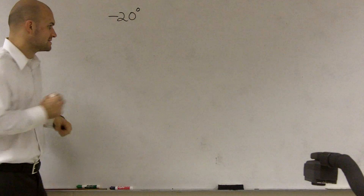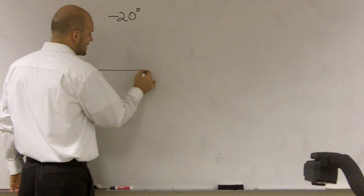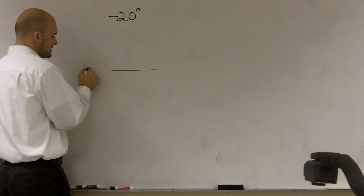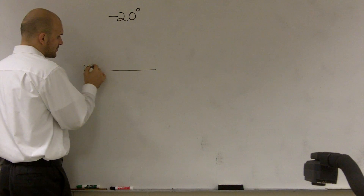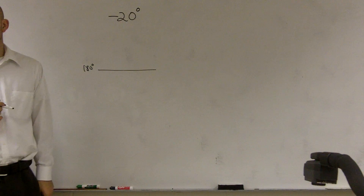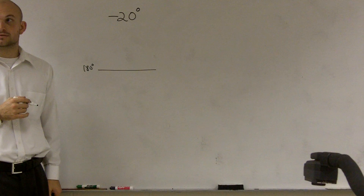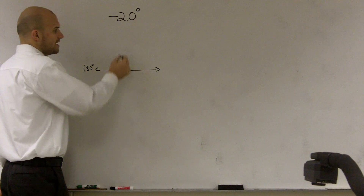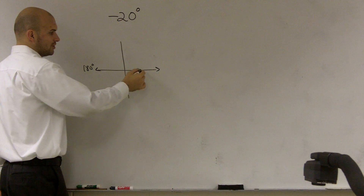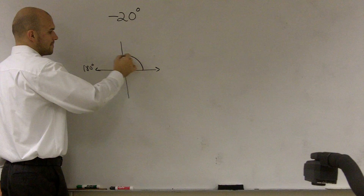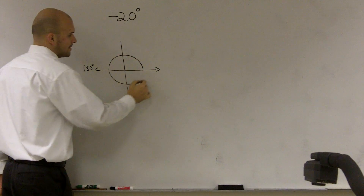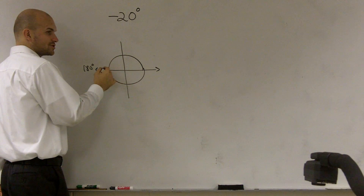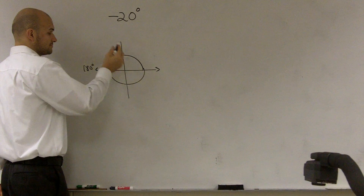One thing you guys need to remember — if we go back over this, remember our straight angle was equal to 180 degrees. And then we threw in a circle and said that halfway around was equal to pi radians. Right?